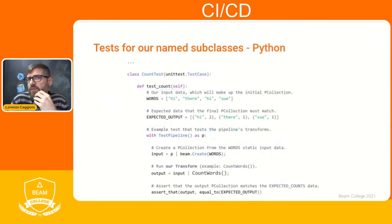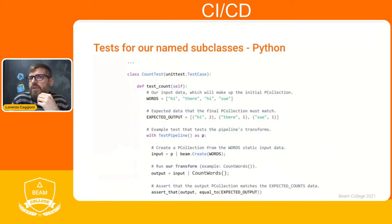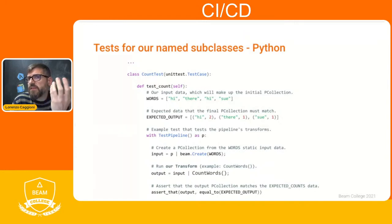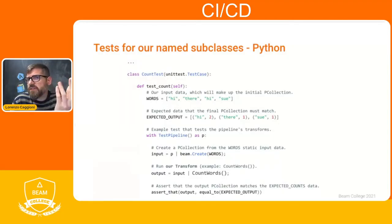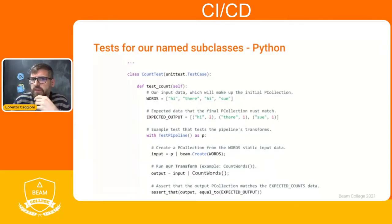The same approach applies to Python. We have TestPipeline included in the Beam Python SDK, and using Python's unit test package we can create a test to check our PTransform — CountWords in this example — and use PAssert to assert the expected result.